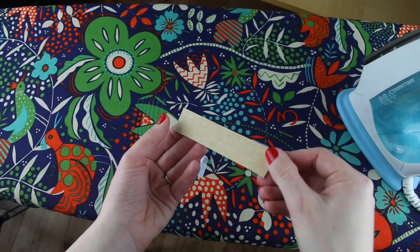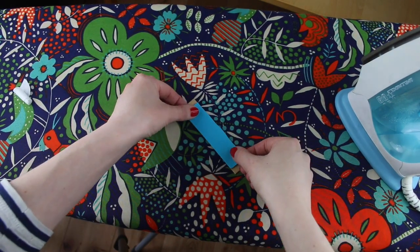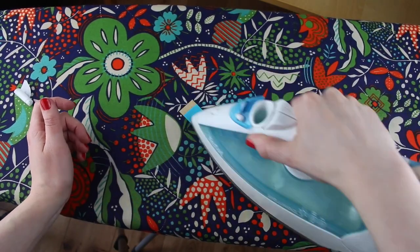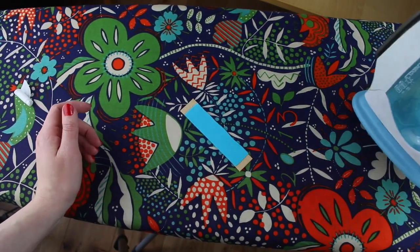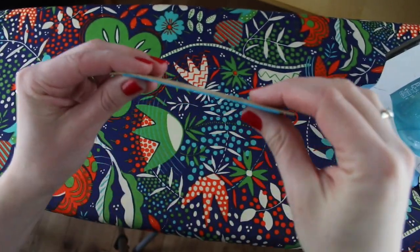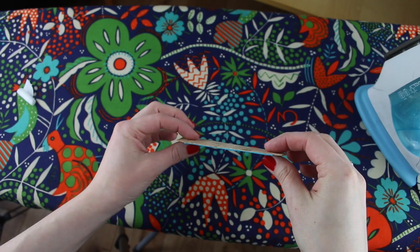Now just take off the backing of the adhesive and now you're going to pop your felt down. There you go so that has attached now and you'll see it becomes one piece that you can then work with when you're stitching.